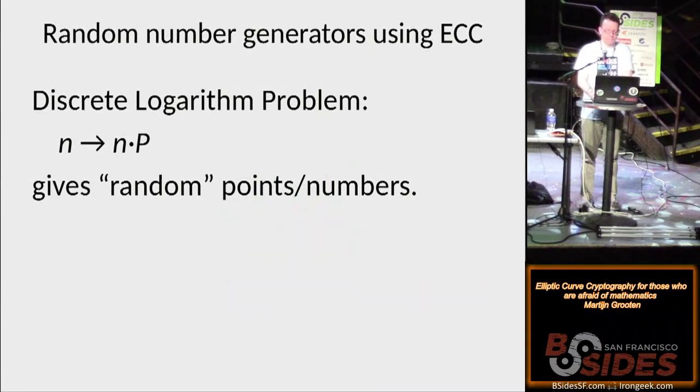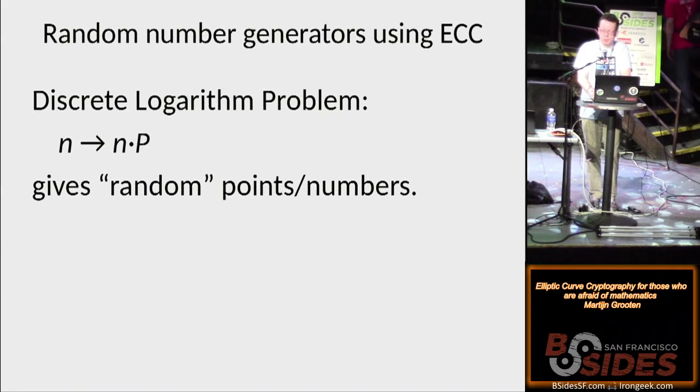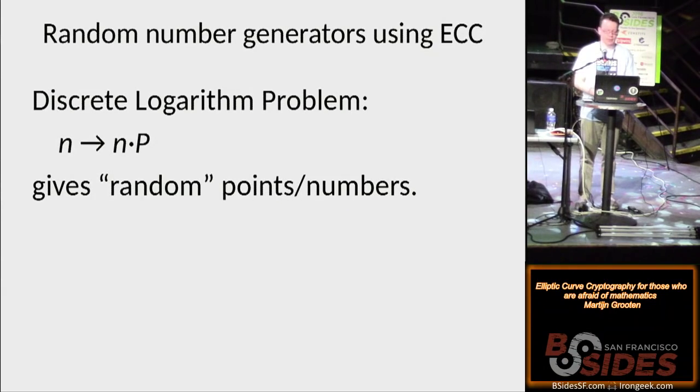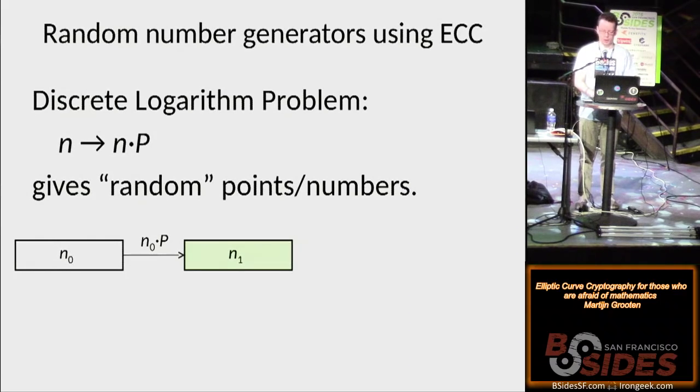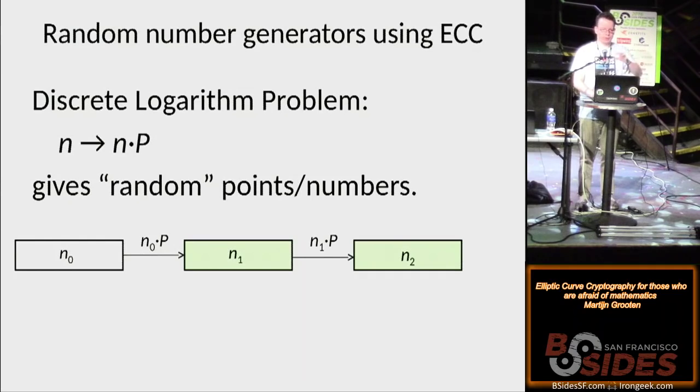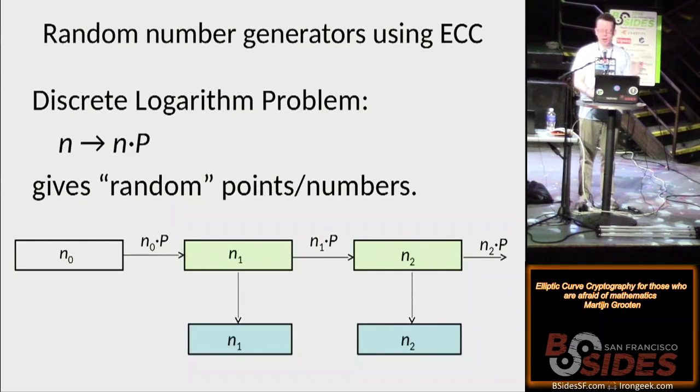Remember that the discrete logarithm problem, one way to look at it is if you get a number n for a given point p, and you take n times p, this doesn't tell you anything about n. So basically it looks very random. So if n is a random number, then the next number, the n times p, the point slash number, is again very random. So how does it work? We start with a number n0, that's like a true random number, then we take n0 times p, we get a number n1, then we take n1 times p, we get another number n2, et cetera. And the output of the random number generator is just n1, n2, n3. Except there's one problem.